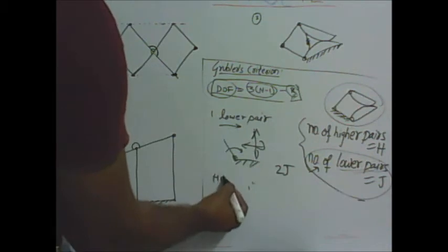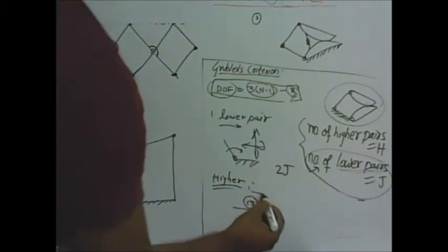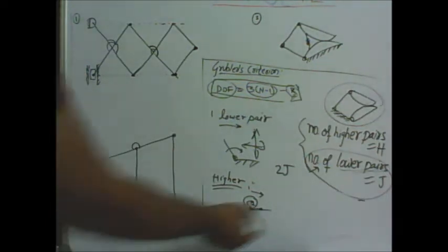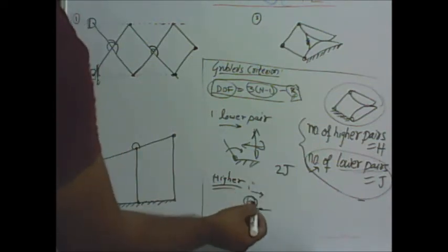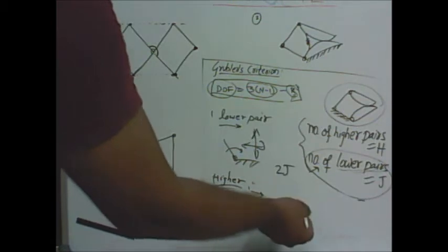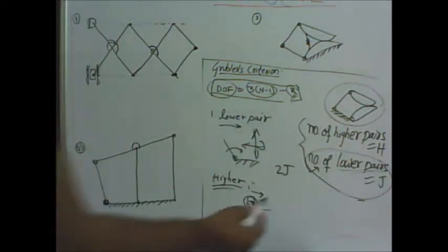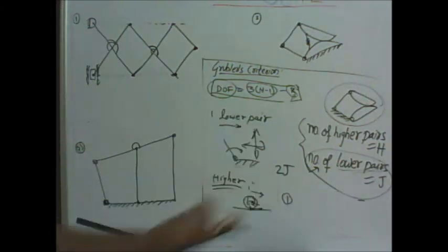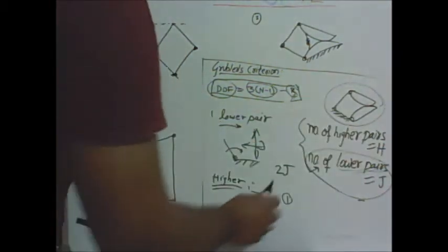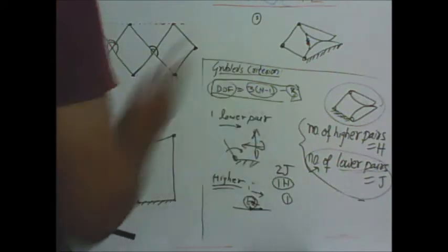For a higher pair, such as a cam pair or rolling with sliding, sliding is present at the point of contact giving a translational velocity, and rolling also occurs. So if we give omega (angular velocity), we find the rolling speed, and sliding adds to the total velocity. There are two independent components, so only one constraint exists. In a planar mechanism, the maximum possible is three; with two independent parameters, only one is constrained. So for each higher pair, only one constraint — that is h constraints for h higher pairs.